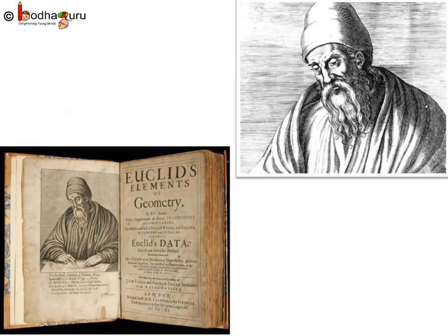Hello everyone, we already know that Euclid collected all the known work and arranged it into his famous treatise called Elements. And that it had 13 chapters each called a book. So let us understand his approach now.